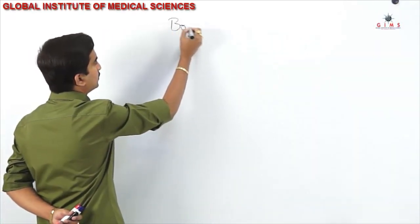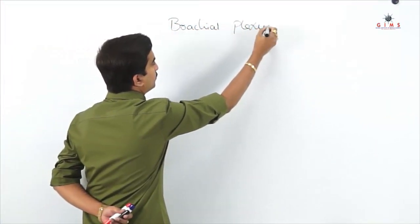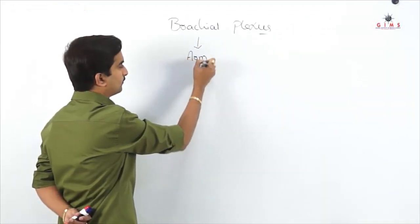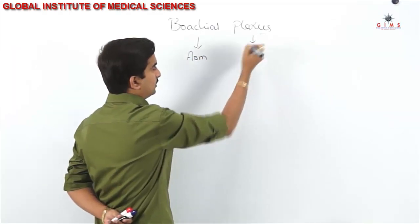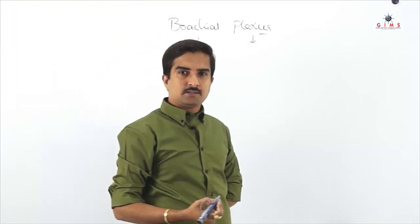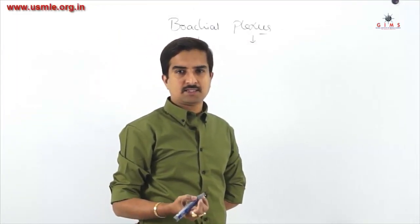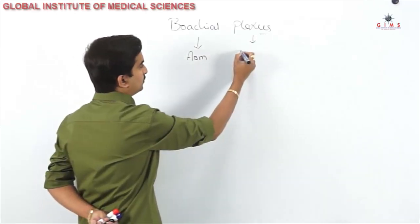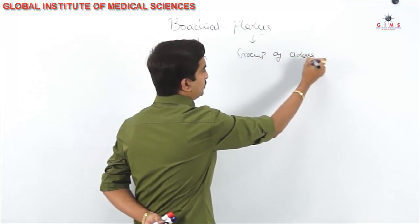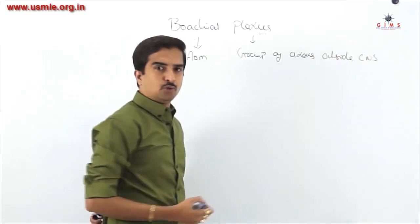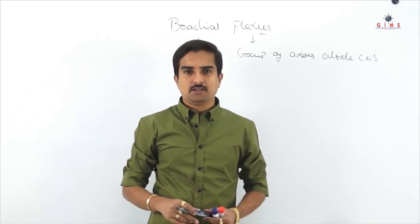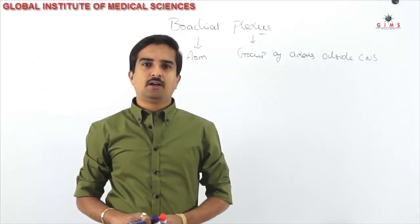First let us see what is the meaning of brachial plexus. 'Brachial' refers to the arm, and 'plexus' means a group of axons lying outside the central nervous system. These brachial plexus are the chief nerve supply of the entire upper limb.